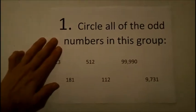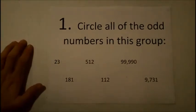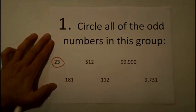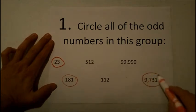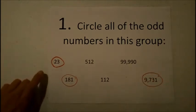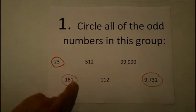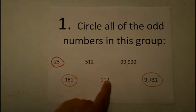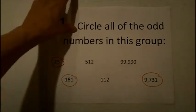Question number one said, circle all of the odd numbers in this group. The three odd numbers are 23, 181, and 9,731. We know that each of these numbers are odd because the number in the ones digit is an odd number, 1, 3, 5, 7, or 9. These three numbers are even because they all end in even numbers.